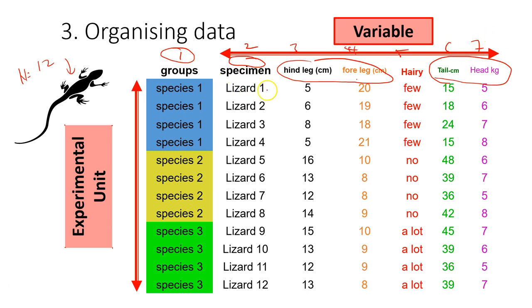For each of these variables, we have data, and the data type for each of these variables is different. For example, for the species we have nominal data, specimen is also nominal data, and the measurement of length or weight is scale data.